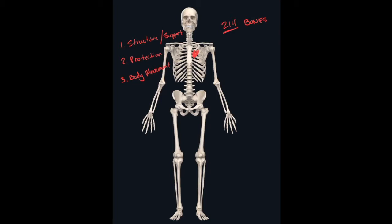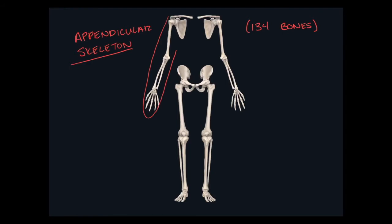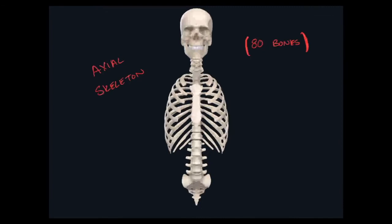Now, the skeletal system as a whole is very complicated — there are 214 bones within us. So anatomists like to break down the skeleton into two major parts. The first part is the appendicular skeleton, which consists of all the bones found in our limbs — the bones of the superior limb and the bones of the inferior limb. The axial skeleton consists of 80 bones: the bones of the head, the bones of the spine, your costal bones or ribs, and your sternum. So if a bone is not found in the superior or inferior limb, it pertains to the axial skeleton.